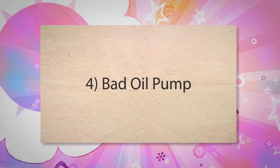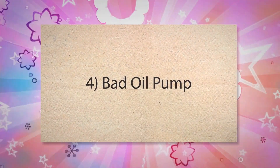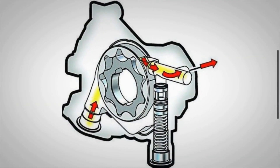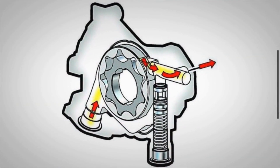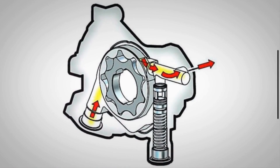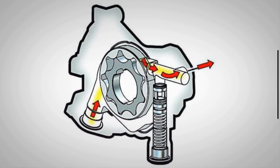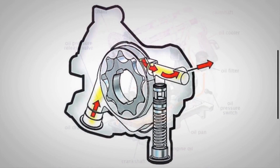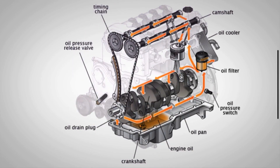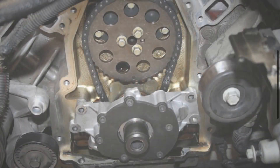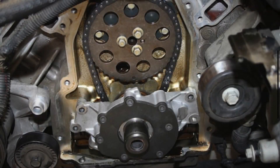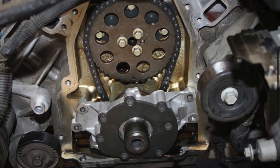4. Bad oil pump: The oil pump is responsible for circulating engine oil under pressure to the moving parts of the engine. If the oil pump is failing, it may not be able to pump oil effectively, leading to reduced oil flow through the engine and causing low oil pressure.